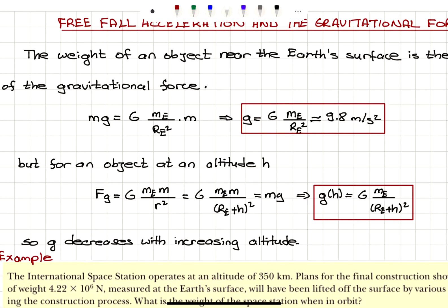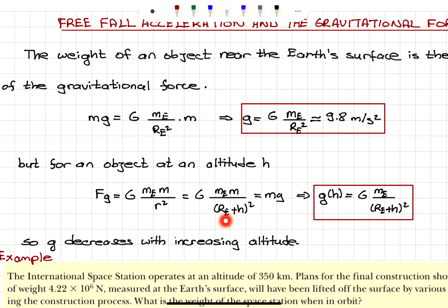Now what happens if this object is at an altitude h? By the same principle, if you have the Earth and the object separated by a distance r, the gravitational force is G·m_E·m divided by r squared. But this time the distance between the object and the Earth's center is the radius of the Earth plus the altitude h, quantity squared.